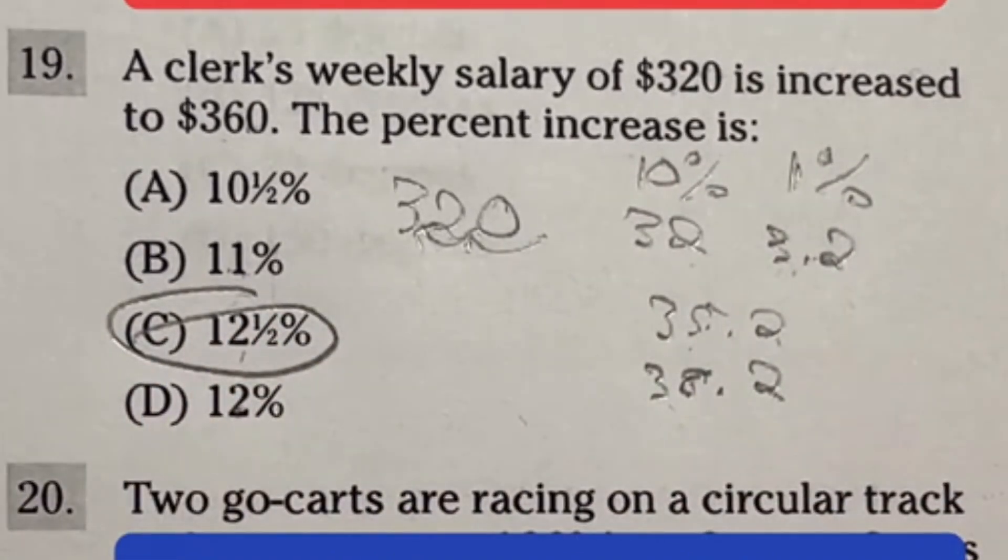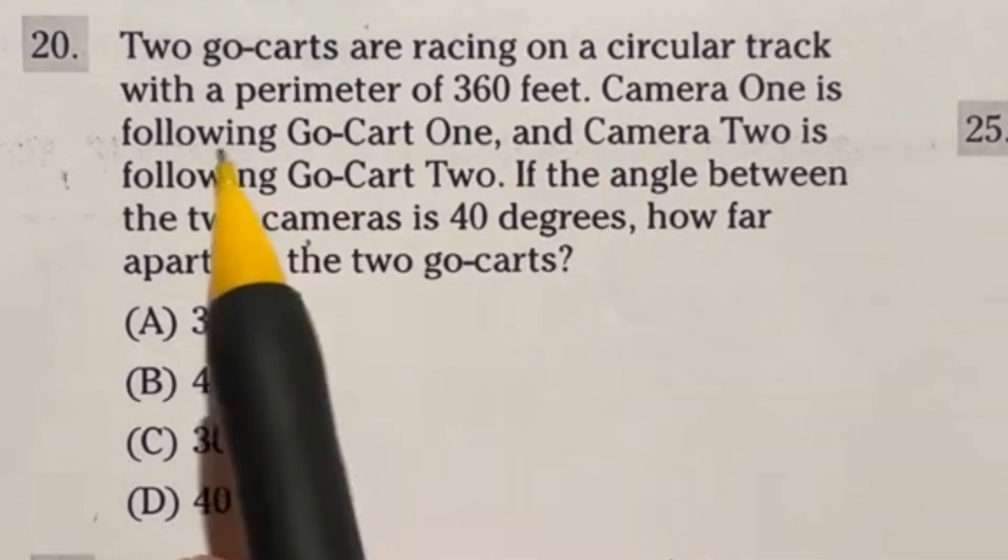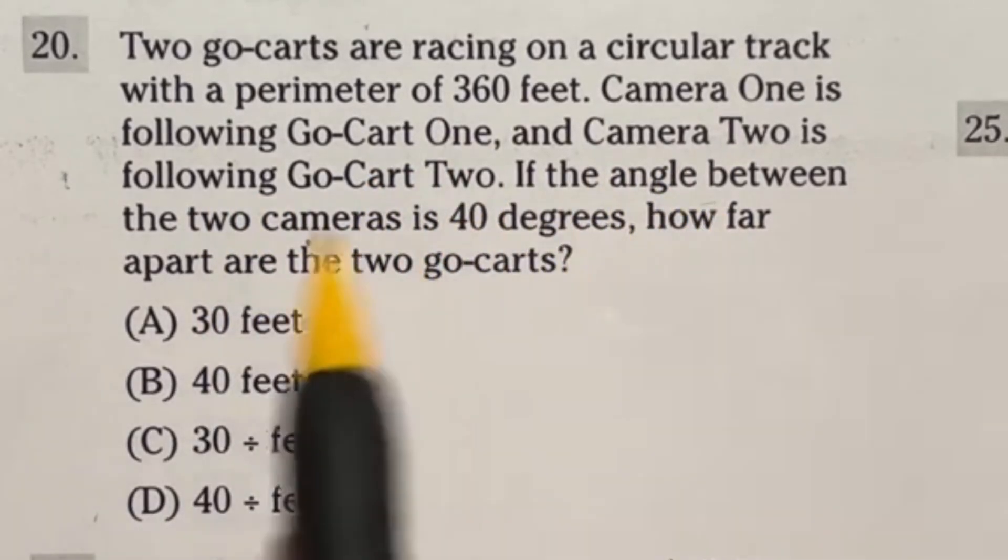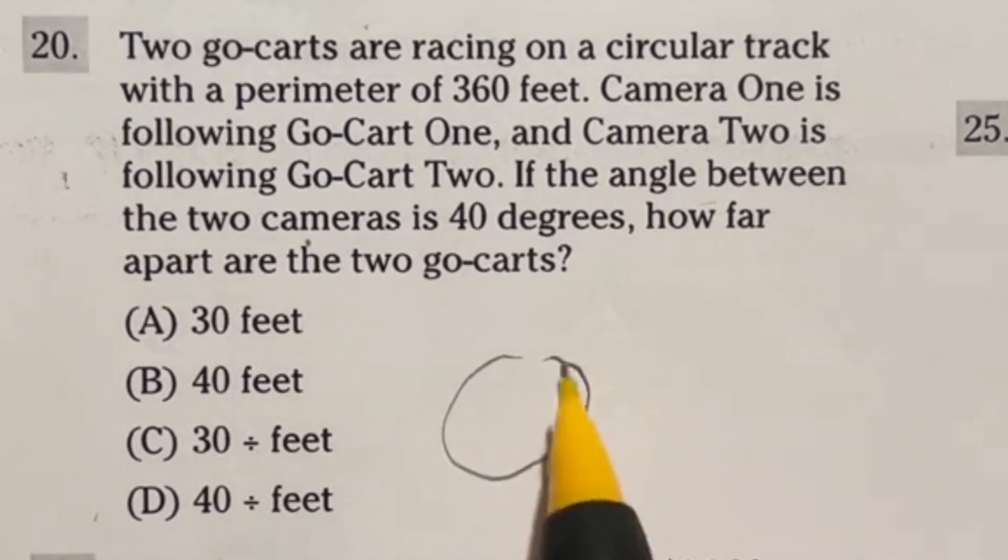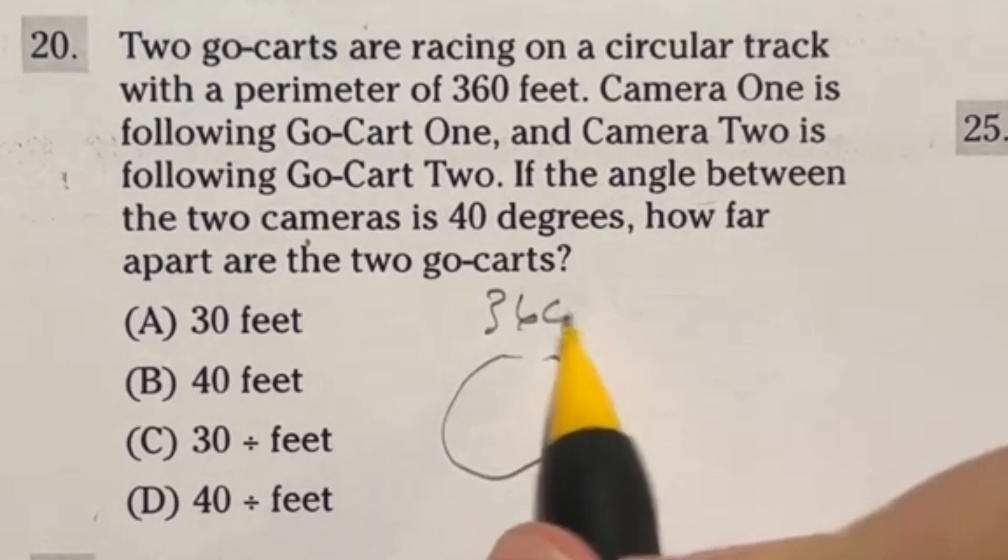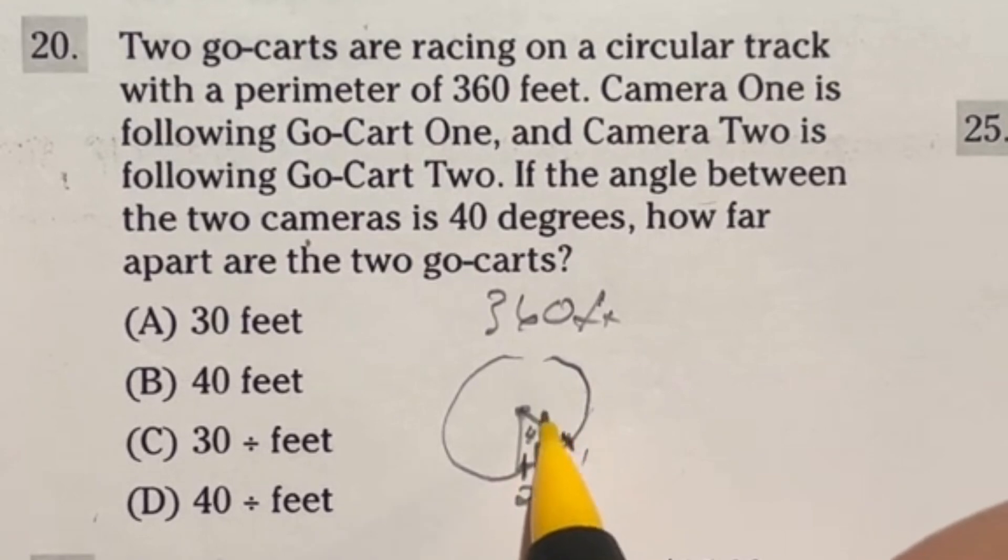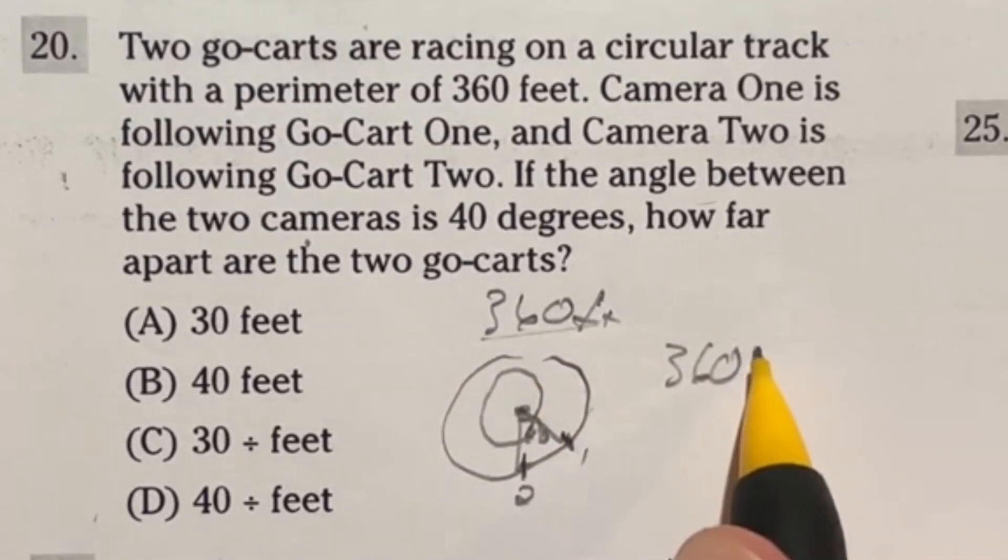Number 20 is actually far easier than it looks at first. It says two go-karts are racing on a circular track with a perimeter of 360 feet. Camera one is following go-cart one, camera two is following go-cart two. If the angle between the two cameras is 40 degrees, how far apart are the two go-carts? We're looking at a circular track and all the way around it's 360 feet. Why did I say this question is so easy? Well it turns out that if you go in a full circle, that's going to be 360 degrees.